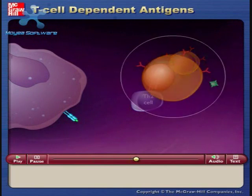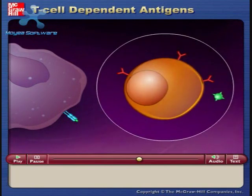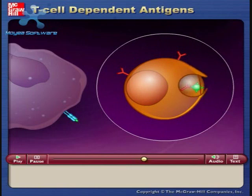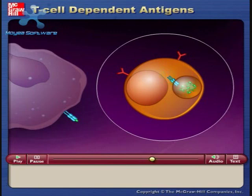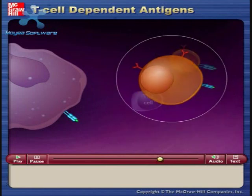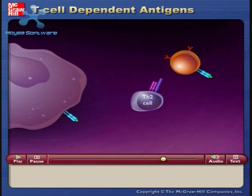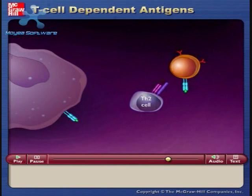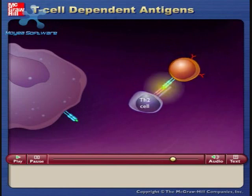B cells also ingest antigens. The antigen reacts with an antibody on the surface of the B cell and is then internalized, digested, and presented at the surface of the B cell on a class II MHC. The antigen–class II MHC complex of the B cell then interacts with the T cell receptor on the activated T helper TH2 cell.